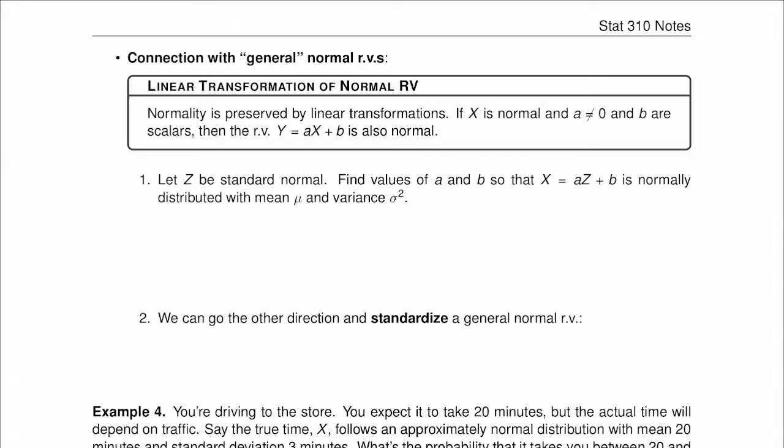Finally, we will see the connection between general normal random variables and the standard normal distribution. Let's see the linear transformation of a normal random variable. The normality is preserved by linear transformations, and this is an important fact.